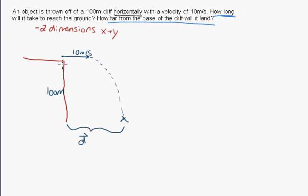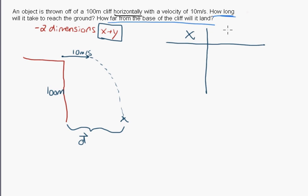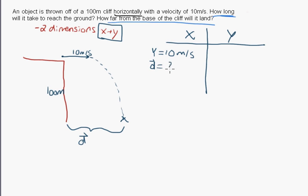That's what we're looking for. With any question involving x and y components, you must split up your variables into x and y. In the x, the initial velocity is 10 meters per second, and the displacement is unknown — that's what we're solving for.